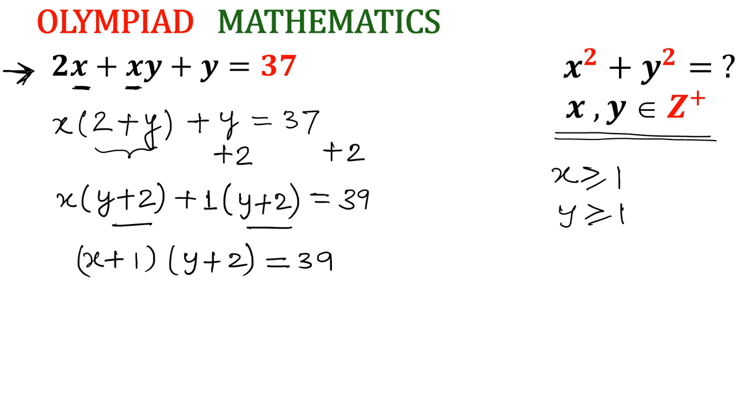We have to find 39's factors. So let us find them. I can consider 39 times 1. I can consider the reverse of that, 1 times 39. I can consider 3 times 13, and fourth case is 13 times 3.